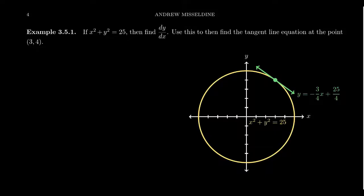Let's go back to the original setting: can we find the tangent line of a circle? This could be done from a completely trigonometric perspective, but we're going to use calculus here because it's a whole lot easier. Let's take the equation x squared plus y squared equals 25 and find the derivative dy over dx implicitly, and use that to find the equation of the tangent line at the point (3, 4).